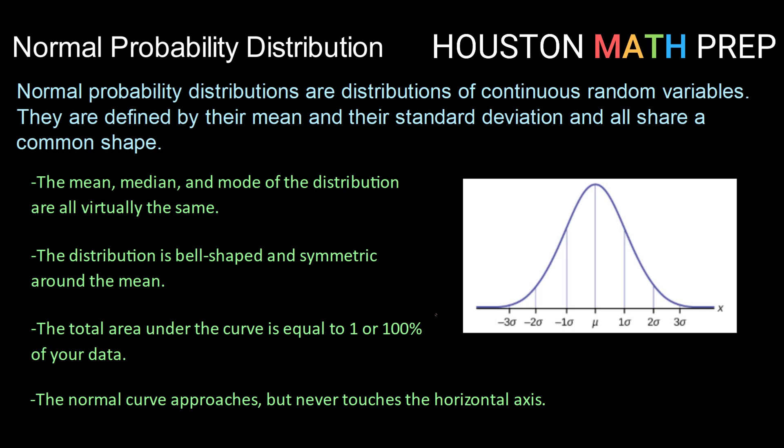Normal probability distributions are a set of distributions of continuous random variables. They're defined by their mean and their standard deviation.